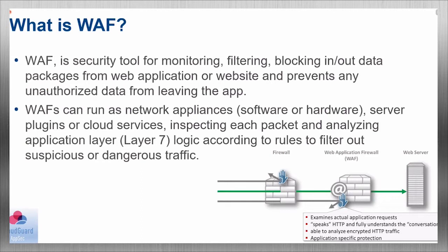A WAF is a security tool for tracking, filtering, and blocking data exchange on web applications, as well as preventing extraction of unauthorized data. WAF can work as a network device, software, hardware, server plugin, or cloud service. It inspects each packet and analyzes layer 7 web requests according to rules and filters. Regular firewalls protect layers 2 and 3; next-generation firewalls protect layer 7 but only via packet signature static analysis, while WAF opens packets and performs more detailed analysis.